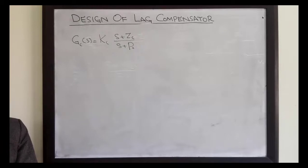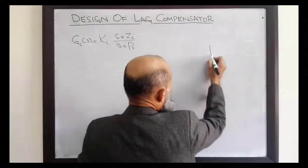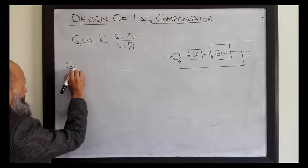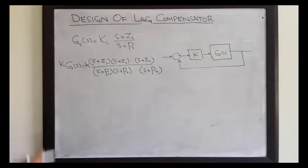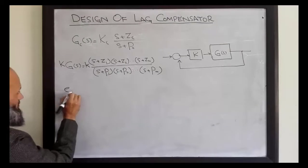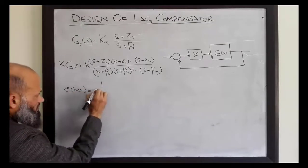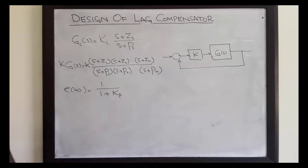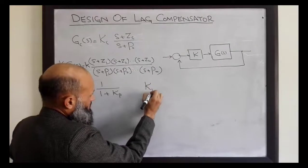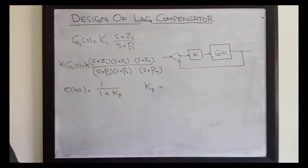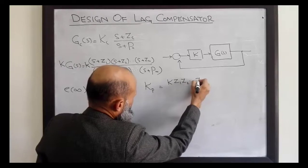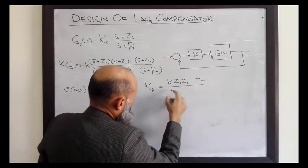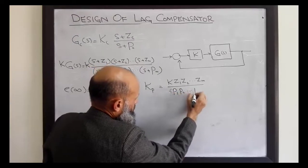So how can it be utilized to improve the steady state error? Consider a type zero plant system. For this particular type zero system, the steady state error will be given by e∞ = 1 / (1 + Kp) for a step input. We have Kp equal to the limit as s tends to 0 of G(s), which gives K·z1·z2...zm / (p1·p2...pn).